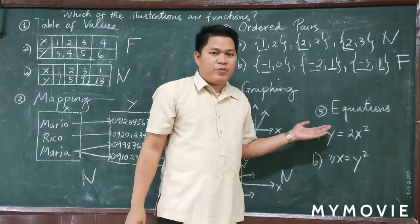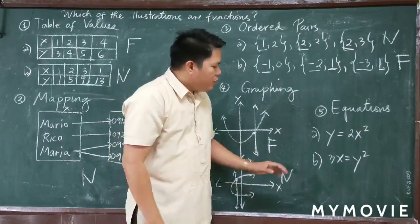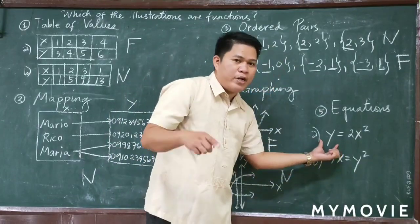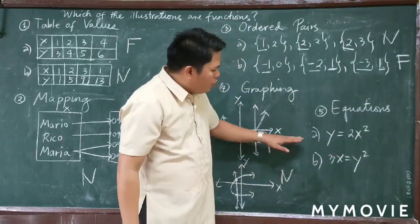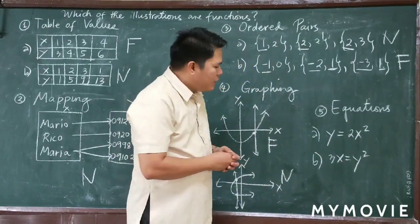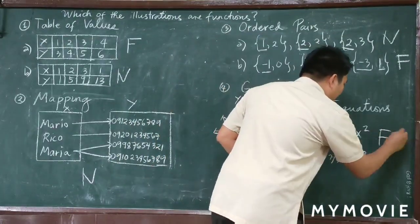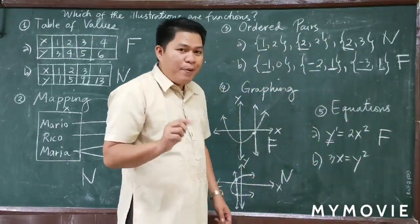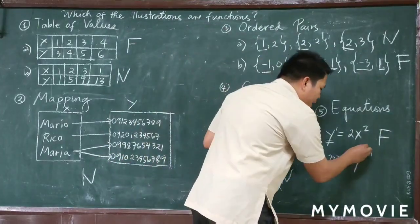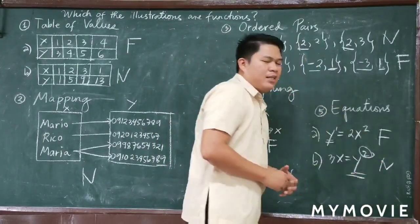The last illustration is all about equations. The technique is to look at the exponent of y. If the exponent of y is more than 1, it is automatically not a function. For Letter A, y = 2x²: the exponent of y is 1, so this is a function. For Letter B, t = y²: the exponent of y is 2, which is more than 1, so this is not a function.